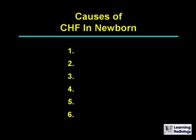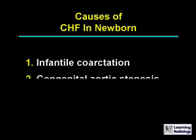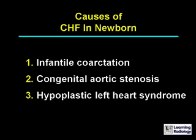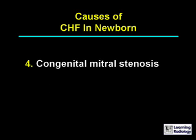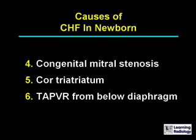The differential diagnosis is for causes of congestive heart failure in the newborn. There are six major causes. The six major causes include infantile coarctation of the aorta, congenital aortic stenosis, hypoplastic left heart syndrome, congenital mitral stenosis, cor triatriatum, and total anomalous pulmonary venous return from below the diaphragm.